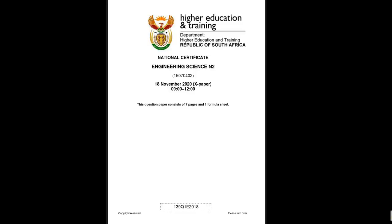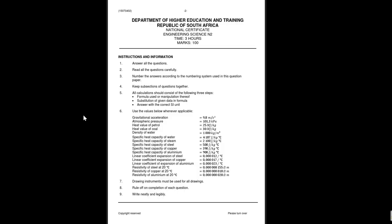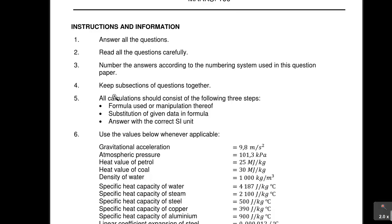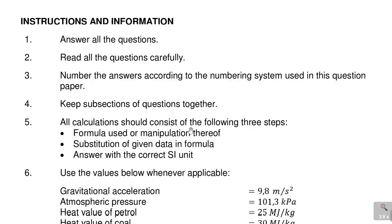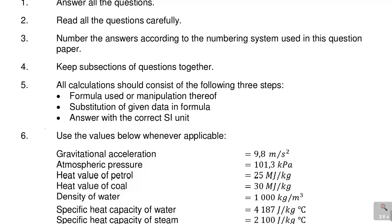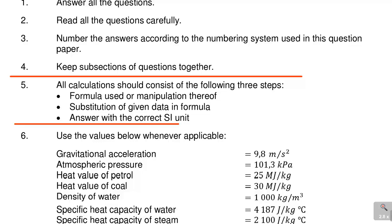As you can see, this paper is divided into seven or eight different topics, and one of those topics is friction. This paper was written in November 2020. A few things you need to know when working on these: number five on the information sheet is very important. All calculations should consist of three steps — the formula used, substitution of given data into the formula, and the answer with the correct SI unit.